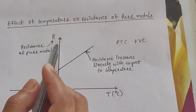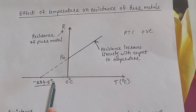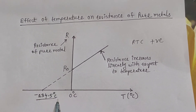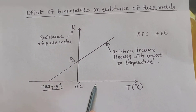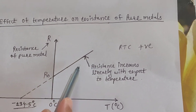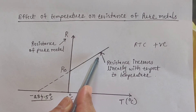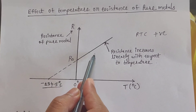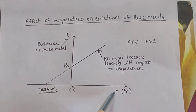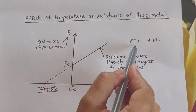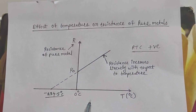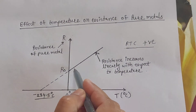First, the effect of temperature on resistance for pure metal. Examples of pure metals are copper, iron, aluminium, and silver. In pure metal, as temperature increases, resistance also increases linearly — meaning the rate of increase of resistance is constant. Therefore, the resistance temperature coefficient, RTC, is positive for pure metal.